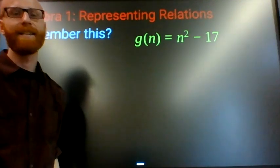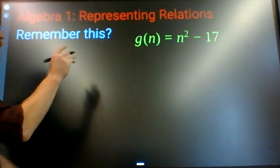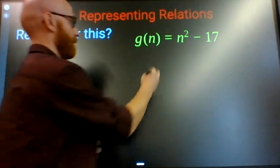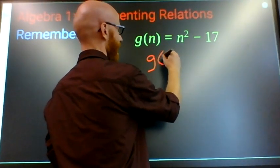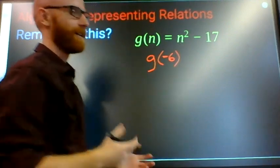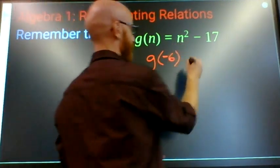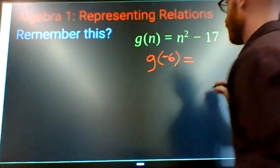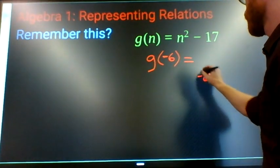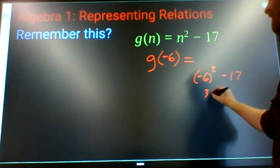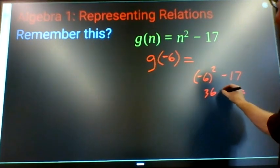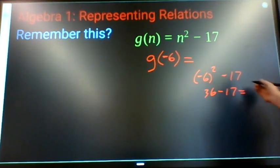For example, what is the value of g when n is negative 6? You should do negative 6 squared minus 17. You got your 36 minus 17 equals 19.